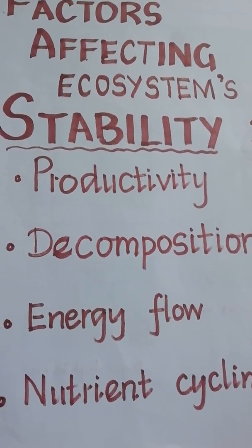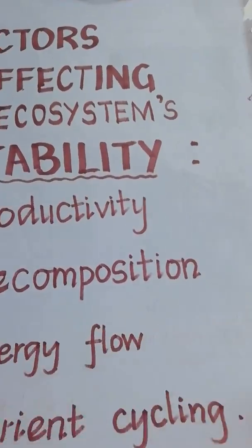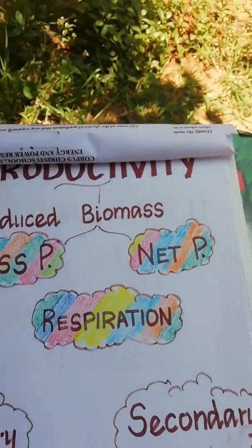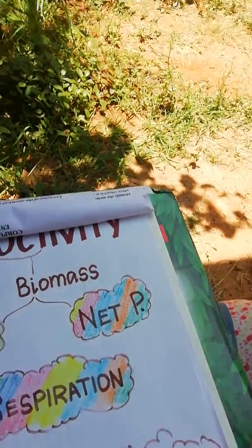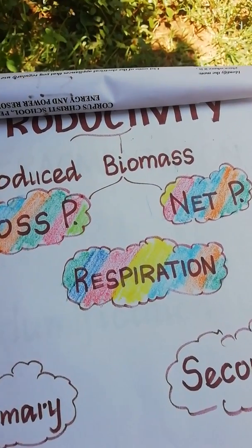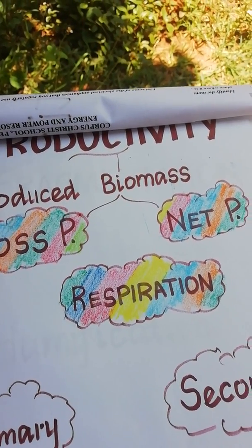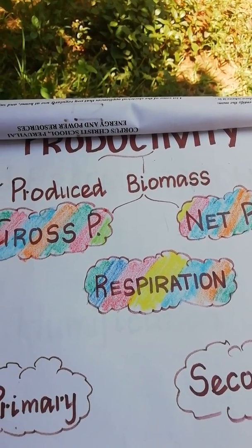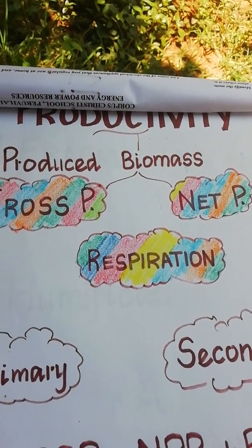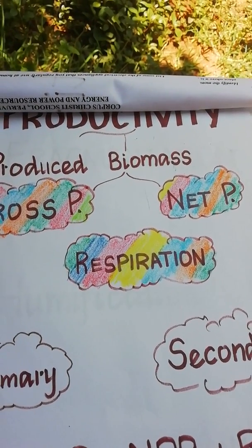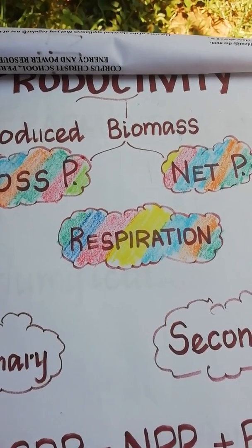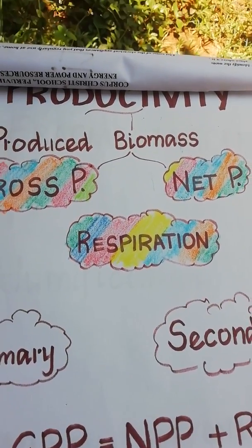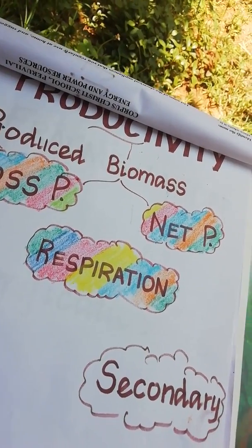The first factor which we are going to learn is productivity. Productivity generally means the produced biomass of an ecosystem — how much amount of radiant energy, sunlight, is fixed in the producers. That is what productivity is. It is a unit measurement, happening at a unit time in a particular defined organism in a definite time, how much amount of radiant energy is fixed. That is what the term productivity exactly means.